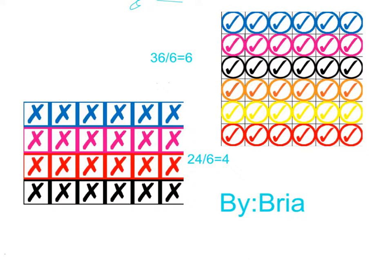Then this one over here is 24 divided by 6, because there's 24 and I have 6 in a group, and it equals 4 because there's 1, 2, 3, 4 groups.